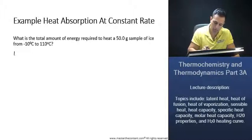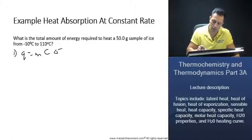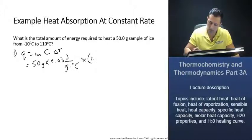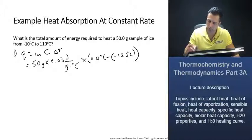For the first step, we can use the energy equation that was given to us, where it's the mass times the specific heat and the change in temperature. The mass we have here is 50 grams, and the specific heat that was given to us was 2.03 joules per gram degrees Celsius. We're going to zero degrees Celsius from negative 10 degrees Celsius.